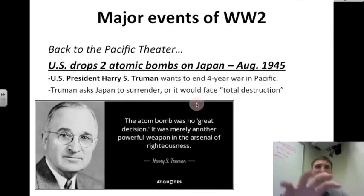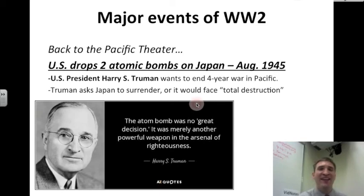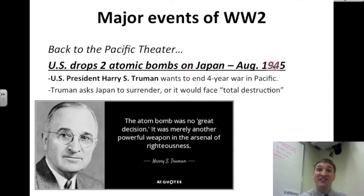Let's go back to the Pacific theater and talk about Japan and the U.S. The U.S. drops two atomic bombs on Japan in August 1945. What leader makes this decision? U.S. President Harry S. Truman.